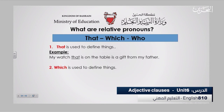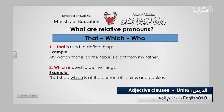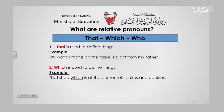The second one is 'which.' Which is also used to define things, but it can sometimes be used to define people. Mainly, though, it's used to define things. For example: 'That shop which is at the corner sells cakes and cookies.' Here I am talking about the shop and determining it using 'which.'